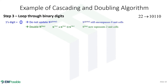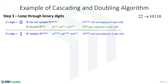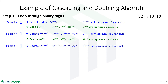The second digit is a one, so we update the global scattering matrix with the binary scattering matrix. At this point the binary scattering matrix represents two unit cells, so the global scattering matrix now represents two unit cells. We then double the binary scattering matrix to four unit cells. The third digit is also a one, so we update the global scattering matrix again. Before this operation it encompassed two unit cells and the binary scattering matrix encompassed four, so after combining them the global scattering matrix encompasses six unit cells. We then double the binary scattering matrix to eight unit cells.